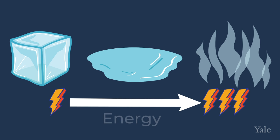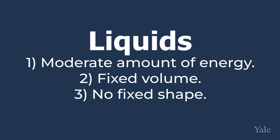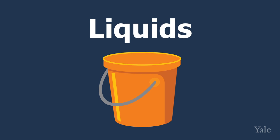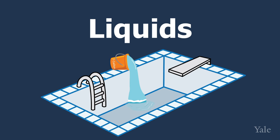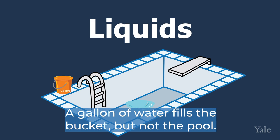Liquids have more energy than solids, but less energy than gases. They're like if your school dance has a moderate amount of energy—the music is okay and most people are attempting to move around in a somewhat rhythmic or dance-like fashion. Liquids have a fixed volume but no fixed shape. So you can pour a gallon of water into a swimming pool or a bucket. When you do this, it changes shape to fit the shape of its container, but its volume will not change and it is still just a gallon of water.